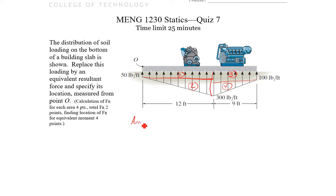So area one, so I have 50 pounds per foot times 12 feet. So FR1 equals 12 feet times 50 pounds per foot. So that's going to be 600 pounds. And that's acting at X1, it's going to be six feet from O. It's just a nice rectangle, so it's going to be half that length.